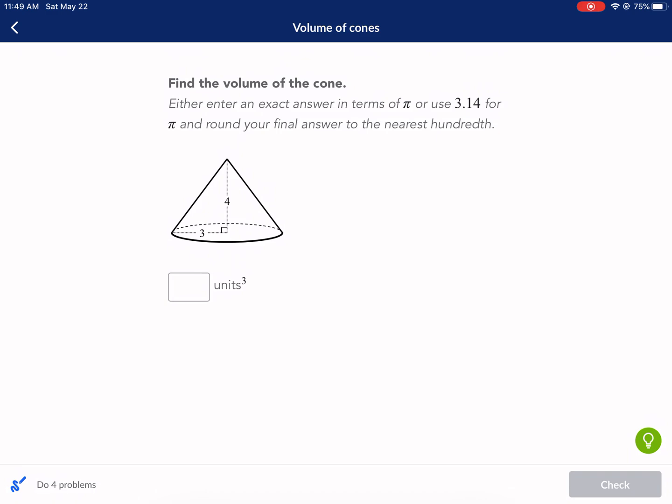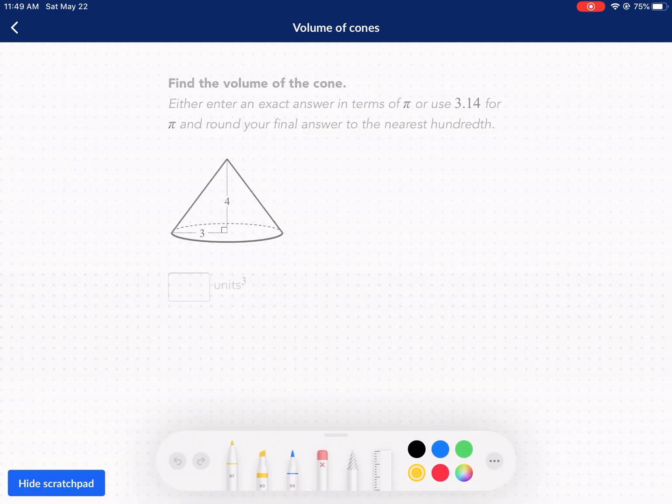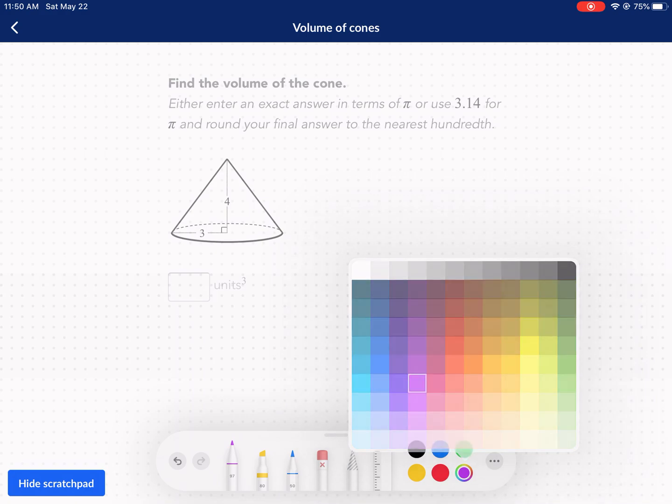Find the volume of the cone. Pretty straightforward. It says we can leave it in terms of pi. Now, I'm going to give a quick summary of how we find the volume of a cone and what it means.